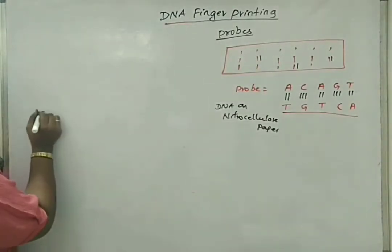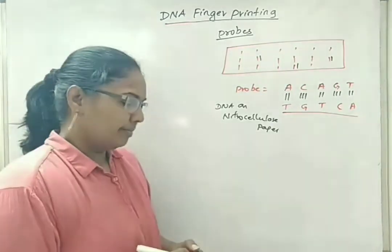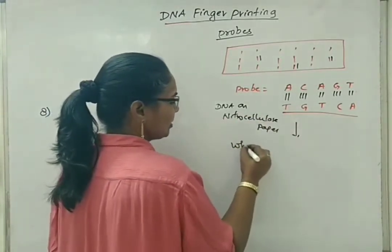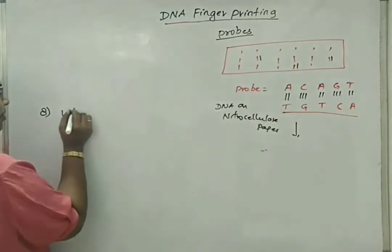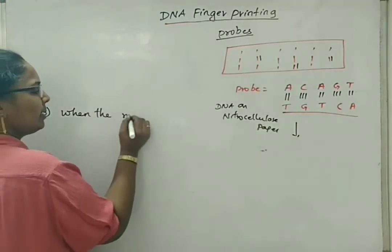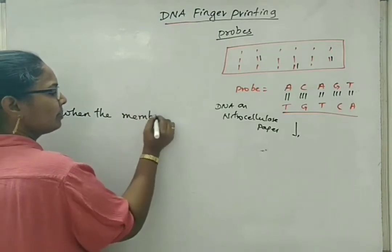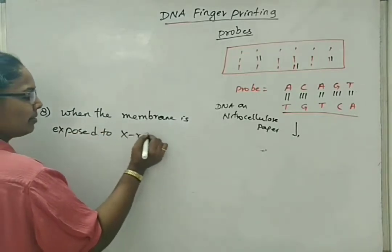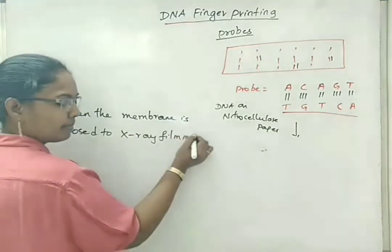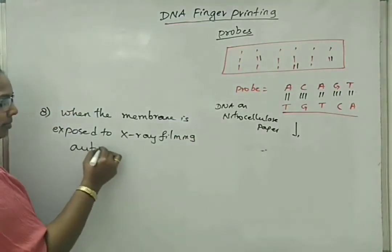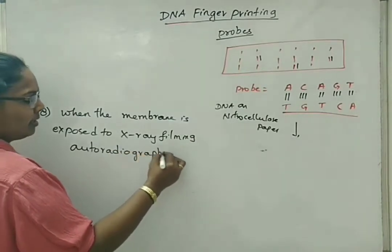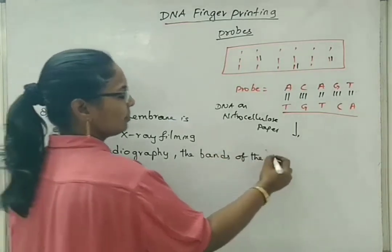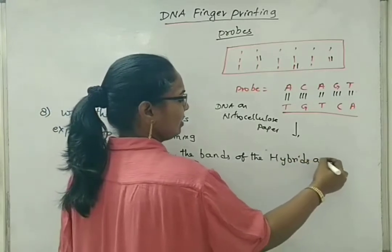The eighth step: the fragments are allowed for X-ray filming. When the nitrocellulose membrane or paper is exposed to X-ray filming — autoradiography — the bands of the hybrid are clearly visible.